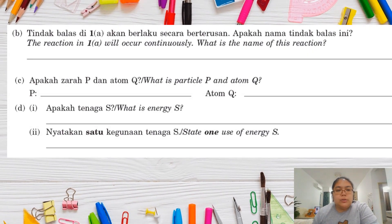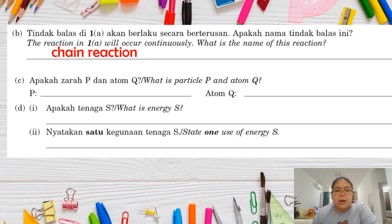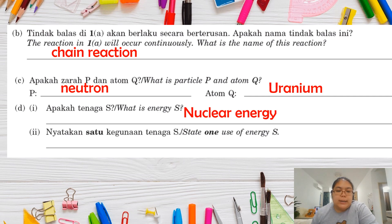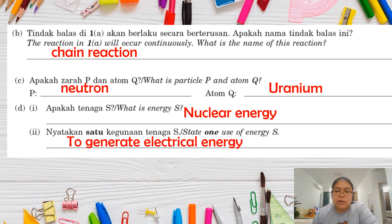For part B, the reaction in part A occurs continuously — this is called a chain reaction, where nuclear fission keeps happening and energy doubles and triples. Particle P is a neutron, nucleus Q is uranium. The energy produced is nuclear energy. The use of this energy is to generate electrical energy.